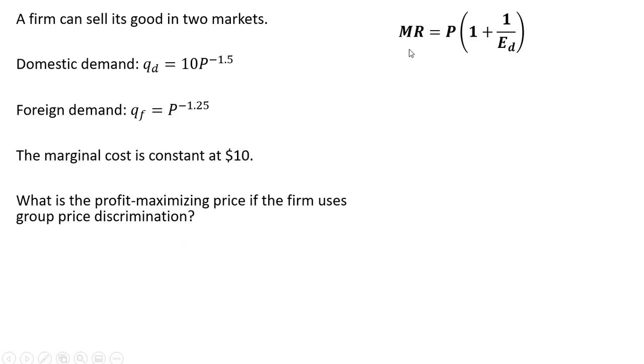So a key idea here to make solving this problem easier is that marginal revenue equals the following: the price multiplied by, in parentheses, 1 plus 1 over the price elasticity of demand. E subscript D is the price elasticity of demand.